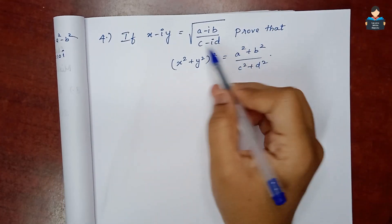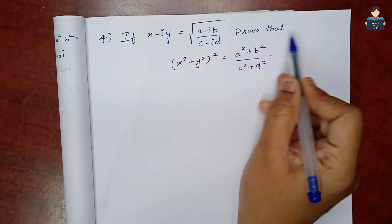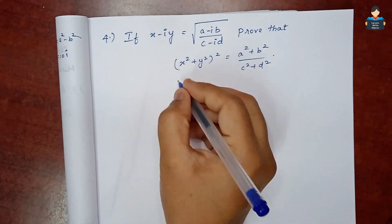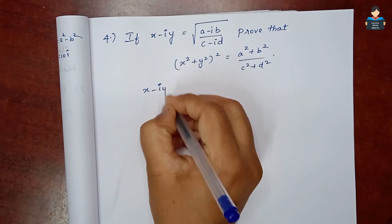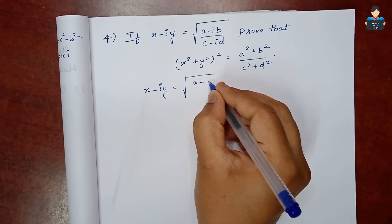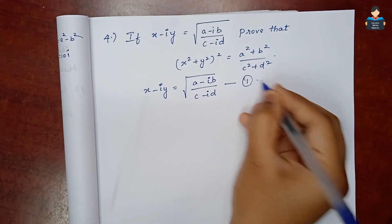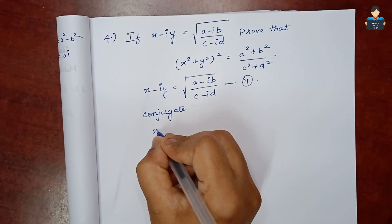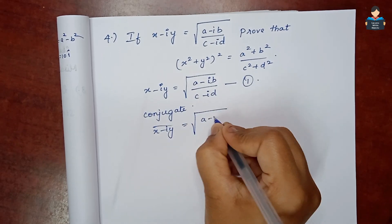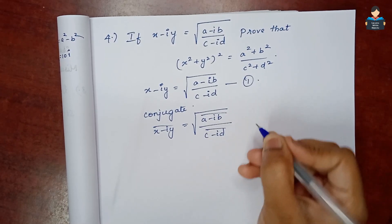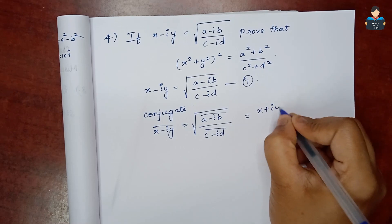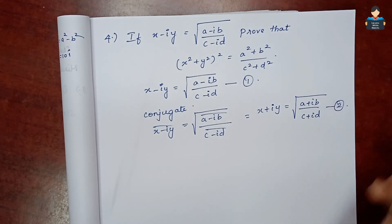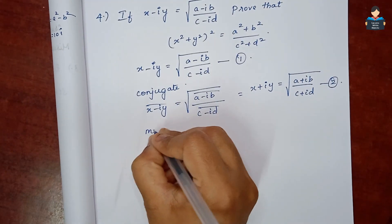Now solving the 4th sum: If x − iy = √((a − ib)/(c − id)), prove that (x² + y²)² = (a² + b²)/(c² + d²). We write equation 1 as x − iy = √((a − ib)/(c − id)). Next, take the conjugate: x + iy = √((a + ib)/(c + id)). This is equation 2.